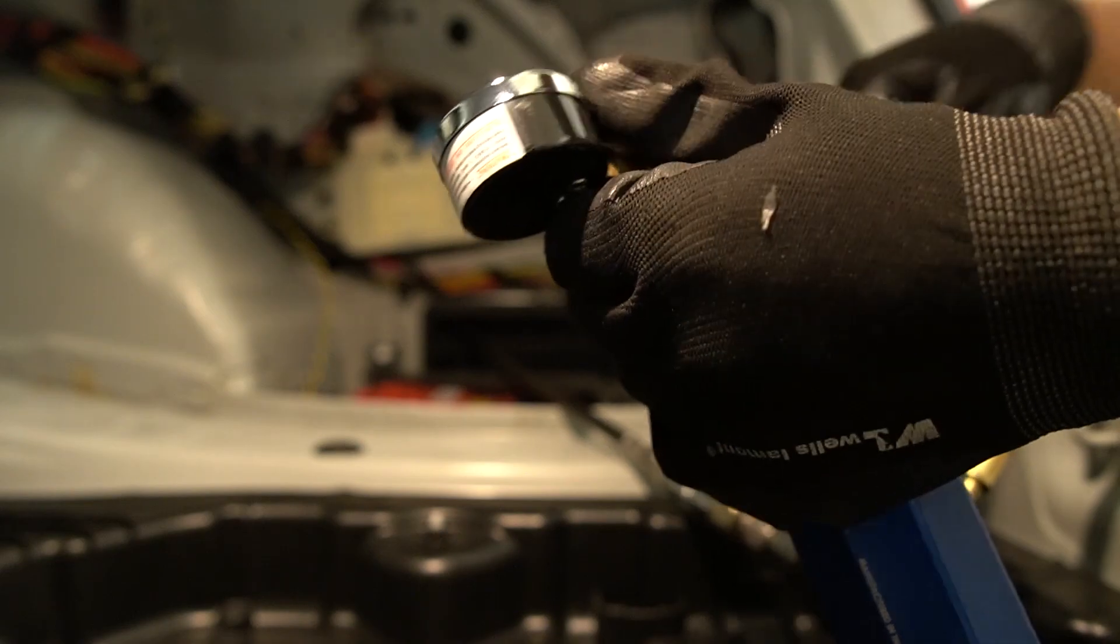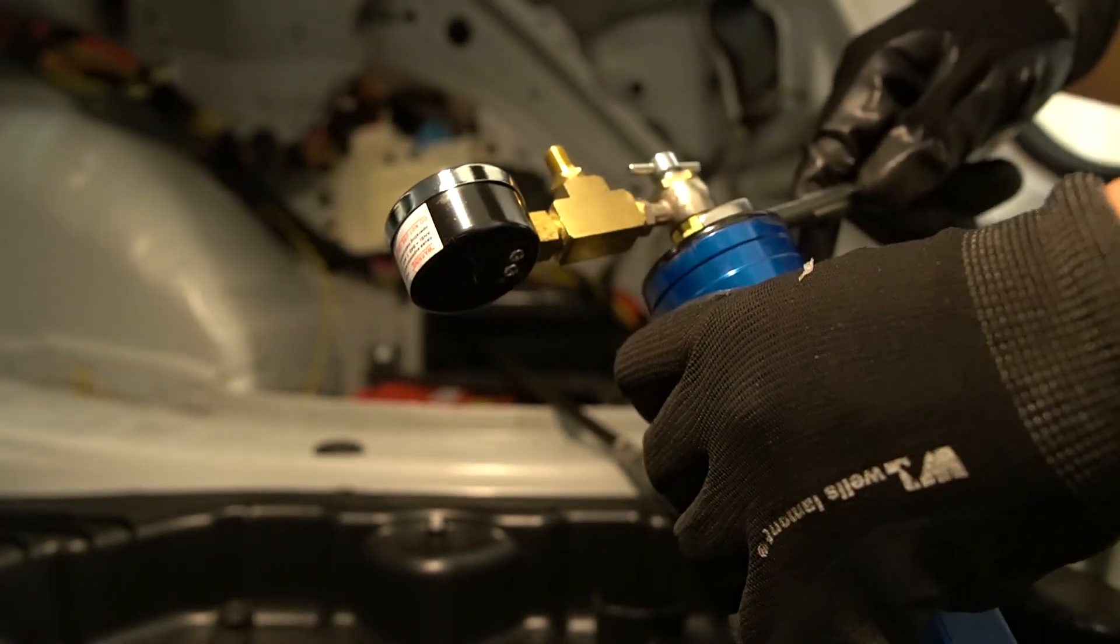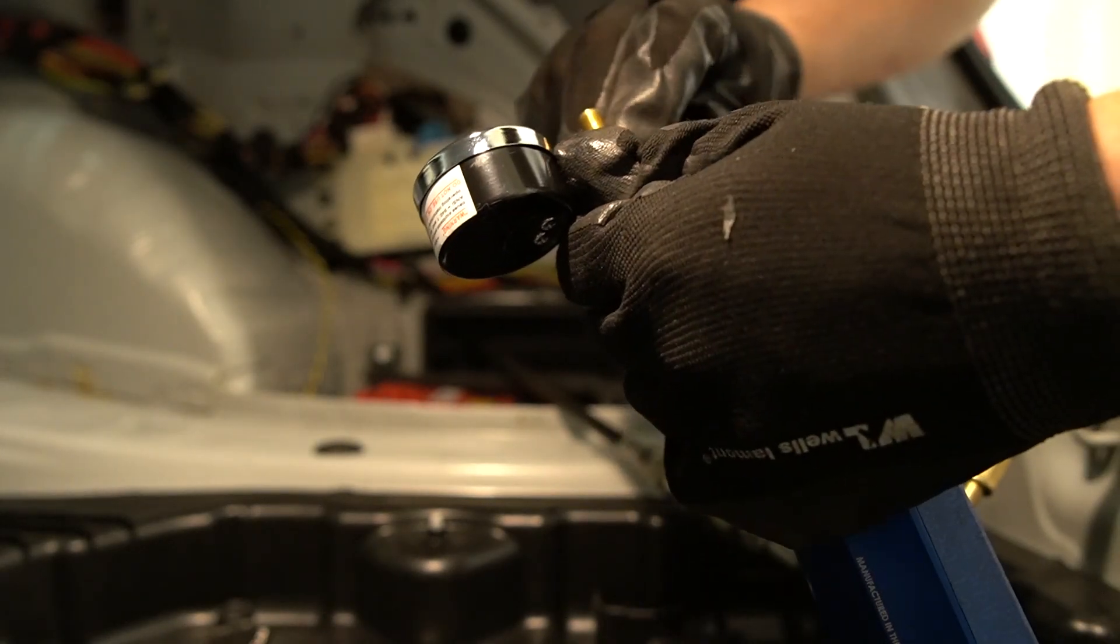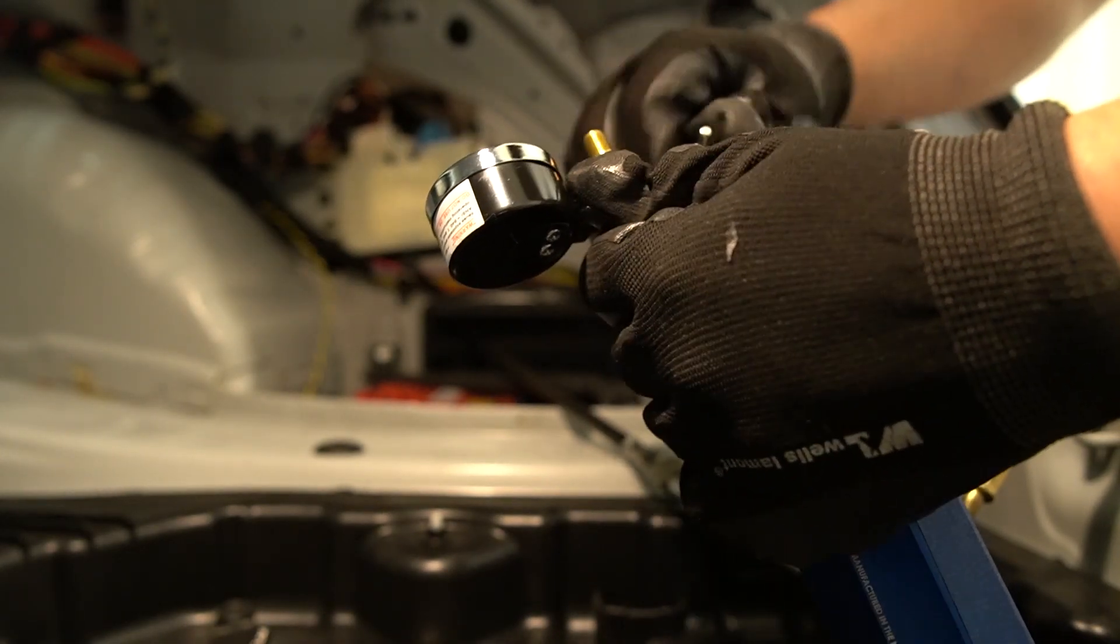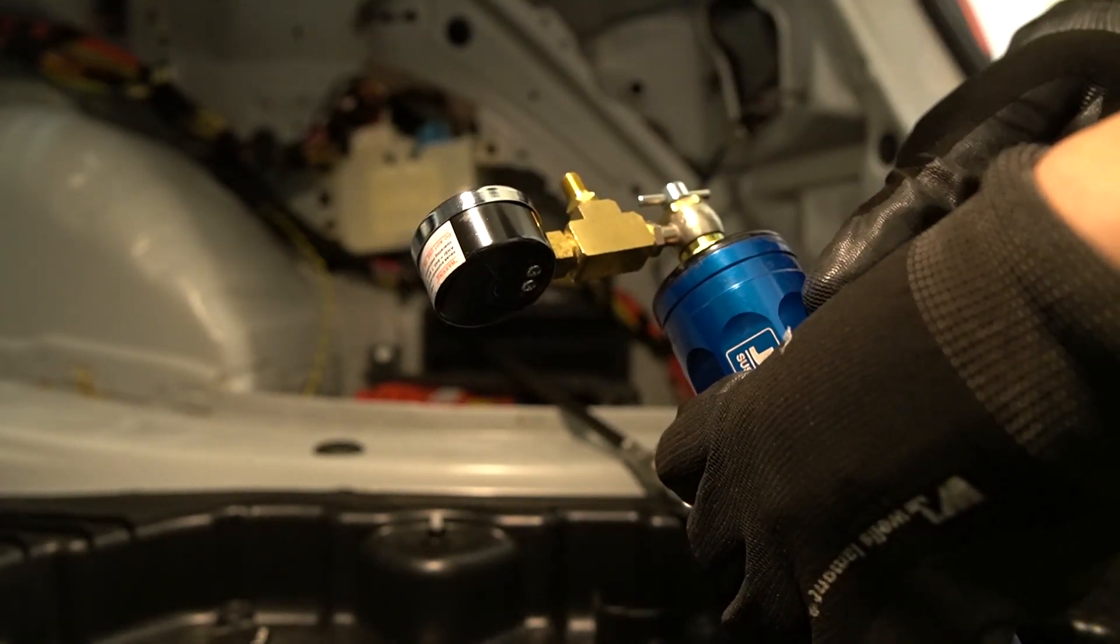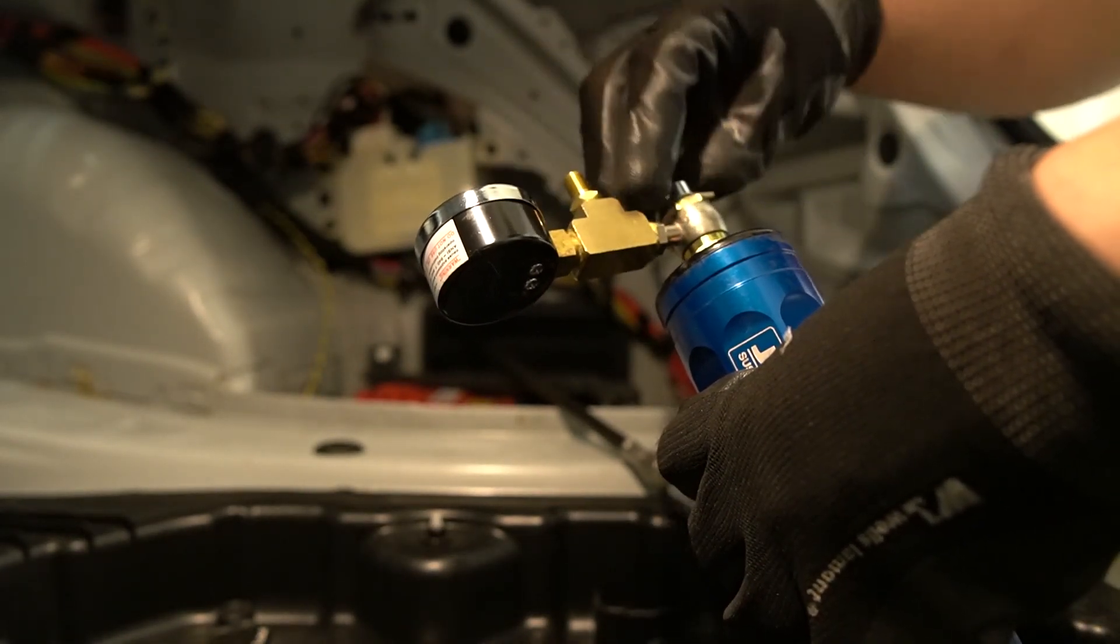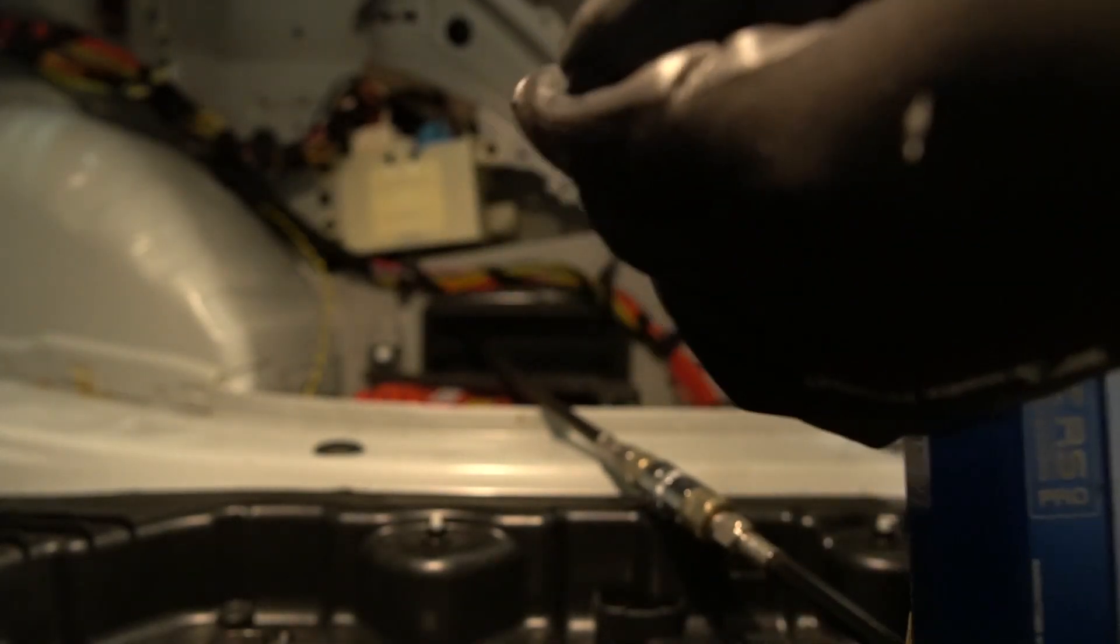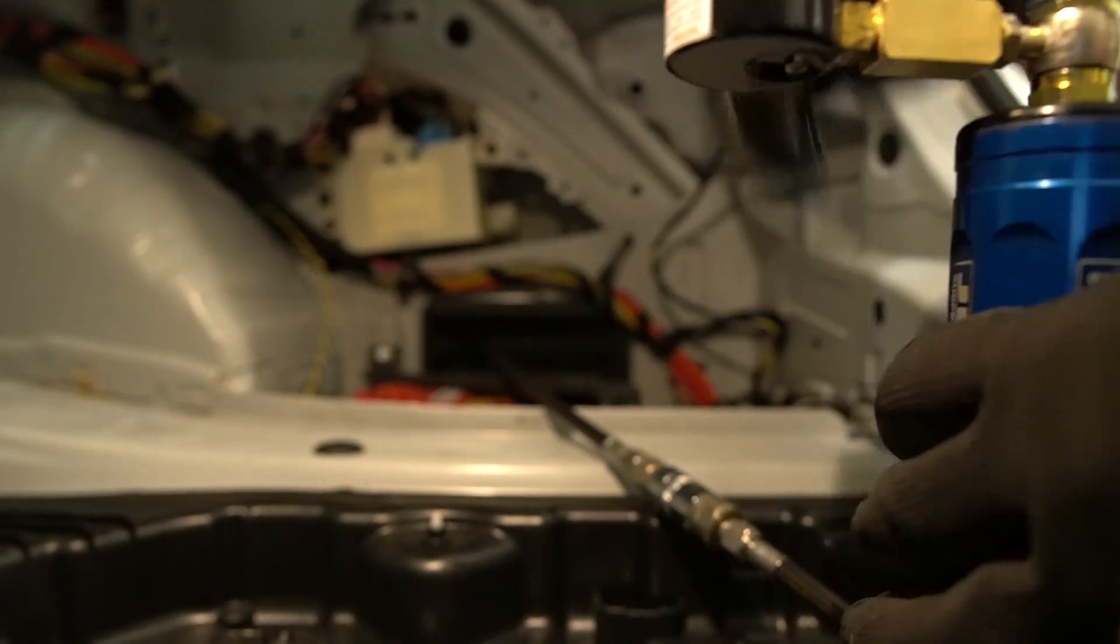Tighten it, and then you can start turning clockwise on this valve right here. That's going to let the air flow through into the gauge. Alright, so let me show you guys.